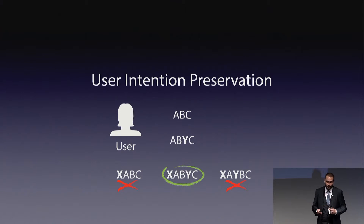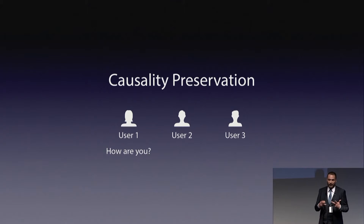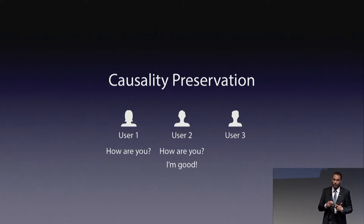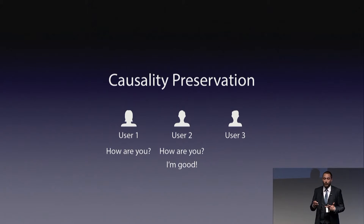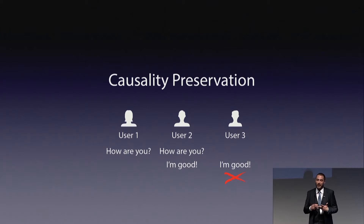Finally, to express causality preservation, we look at three users. User one asks the question 'Hey, how are you?' User two sees the question and replies 'I'm good.' If user three sees 'I'm good' before seeing the question, we don't preserve causality.